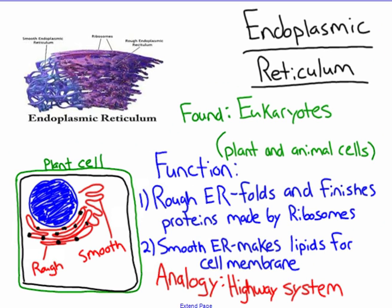Up next we have the endoplasmic reticulum — that's a bigger word, so typically biologists just use the abbreviation ER. There are two different types of ER: rough and smooth. We call the rough ER the rough ER because there are ribosomes on it. The function of the rough ER is to fold and finish proteins made by ribosomes. The smooth ER makes the lipids for the cell membrane.